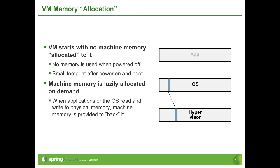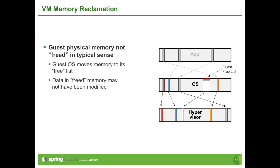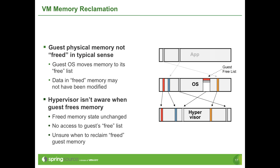The hypervisor has a similar challenge. It intercepts reads and writes to physical memory in the guest and maps those to machine memory on the host. However, there's an important separation of concerns: the tracking of allocated and free memory within the guest operating system is not visible to the hypervisor. The hypervisor is not even aware of the applications that are running — all it sees is physical memory being written to and read from.